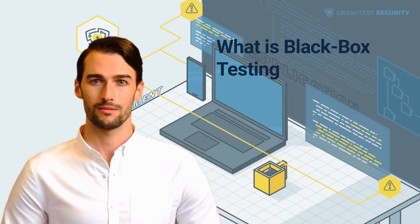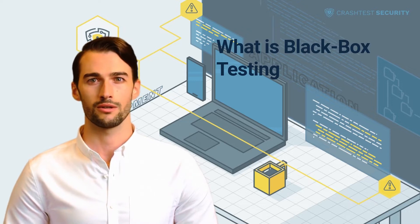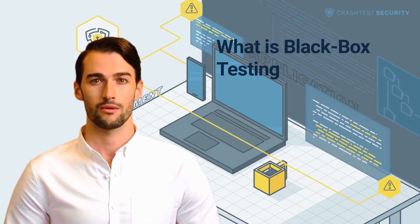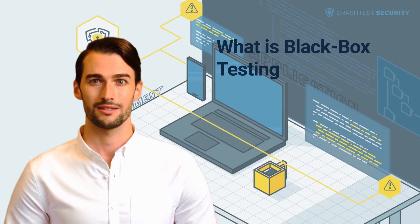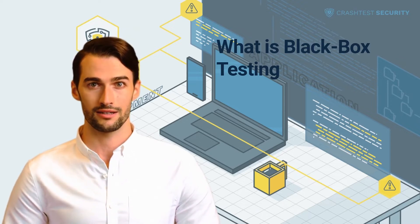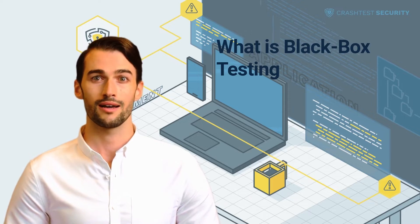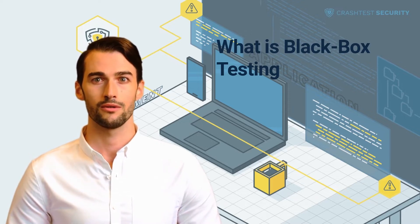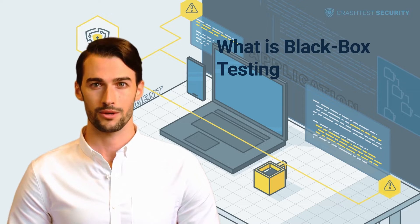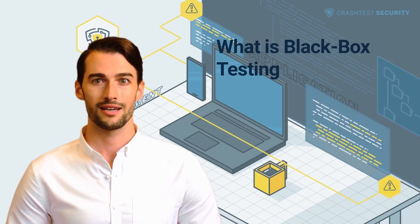For example, a black box penetration test helps organizations reduce their attack surface by uncovering the development team's common vulnerabilities during code testing undetected. QA teams can also build test cases for specific usage scenarios, which provide application performance information from a user's point of view.